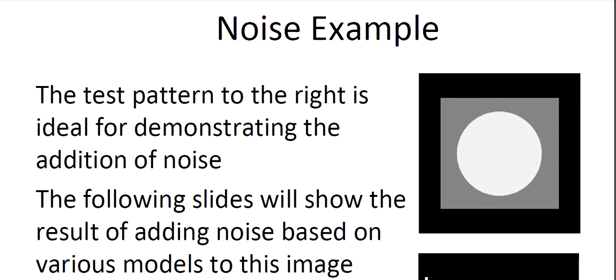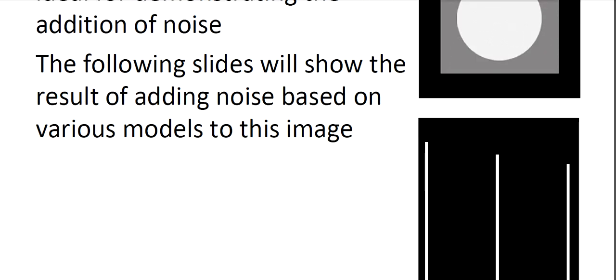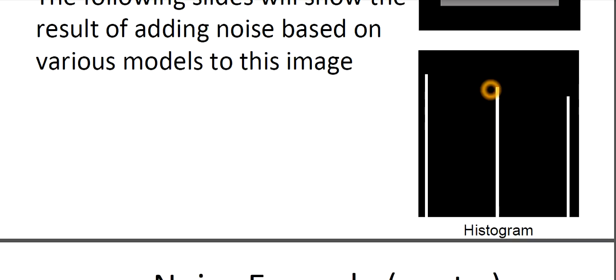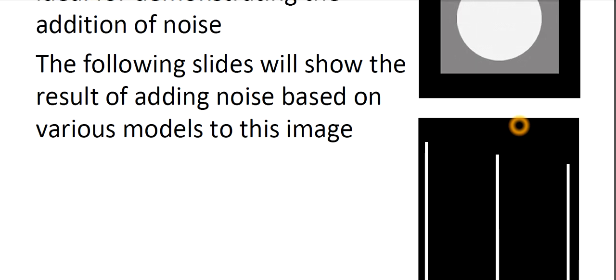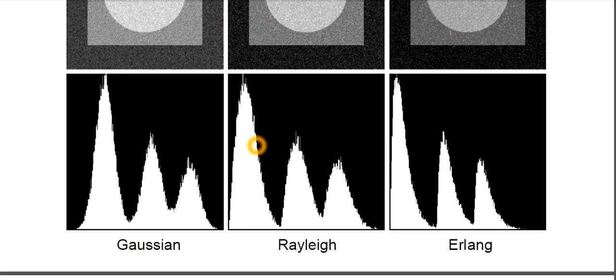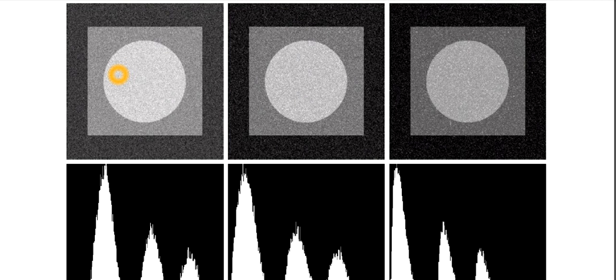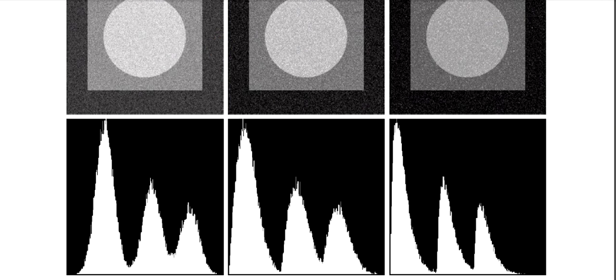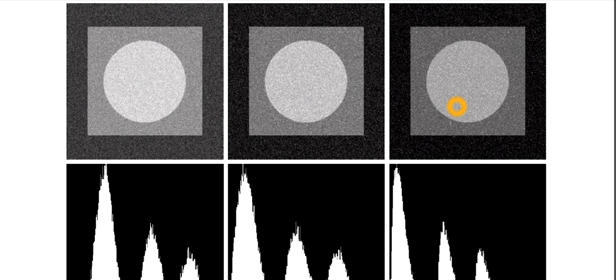The test pattern to the right is ideal for demonstrating the addition of noise. This is the original image with its histogram. After adding some noises, the image took these different forms. Because of the different noise models, it has different outputs. This output and histogram is for Gaussian, this for Rayleigh, and this for Erlang. Then exponential, then uniform, and this is the impulse.